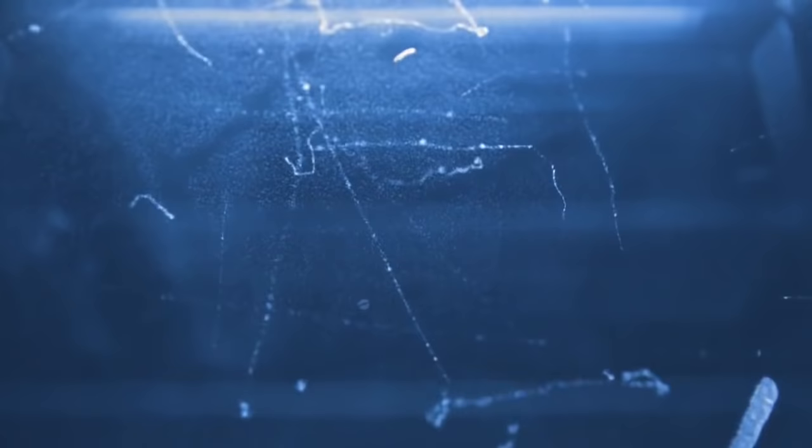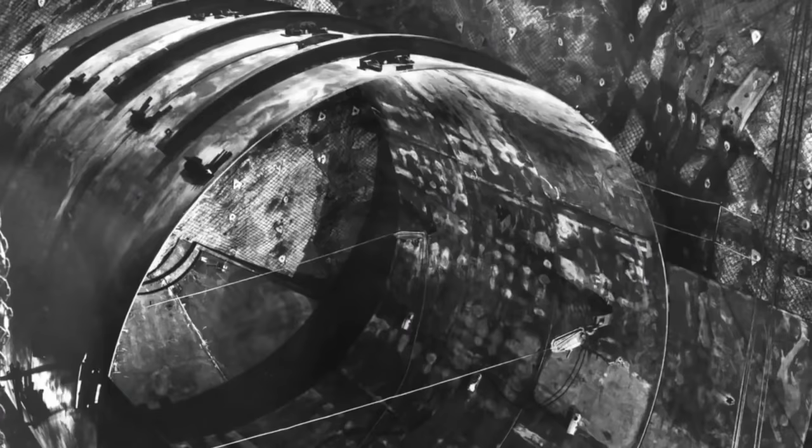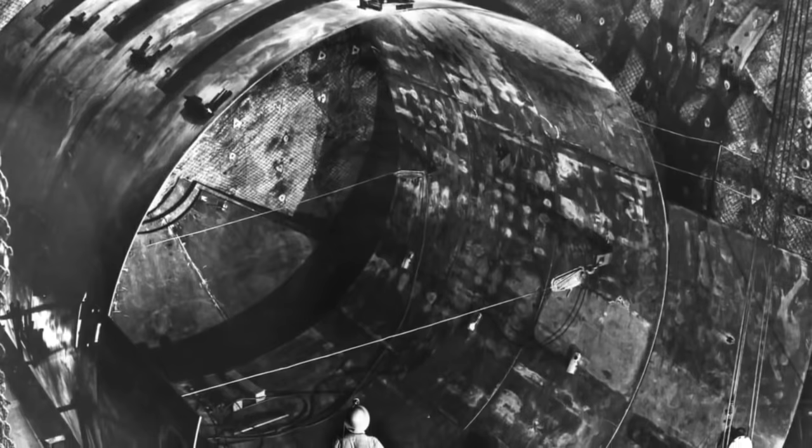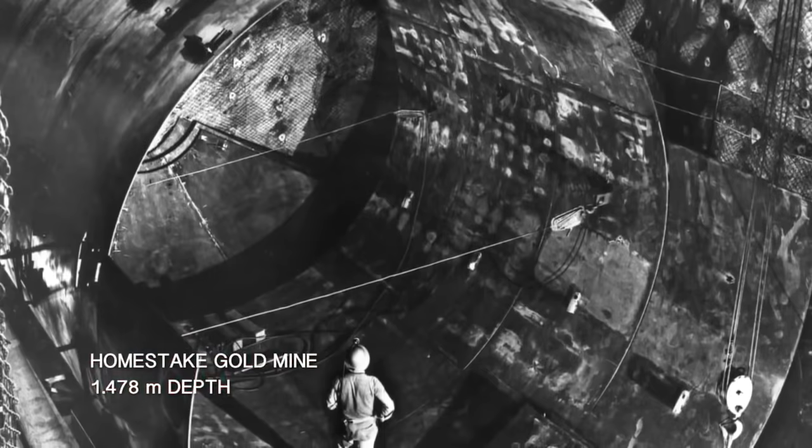Earth's surface is constantly being bombarded by many forms of radiation, like cosmic rays and solar particles. The detector had to be underground to prevent interference from these and other atmospheric particles. With this in mind, it was built inside the Homestake Gold Mine in Lead, South Dakota, at the depth of 1,478 meters.